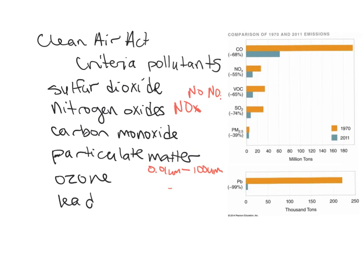Ozone (O3) impairs respiratory function, is harmful to plants and animals, and is a photochemical oxidant — air pollutants formed as a result of sunlight acting on chemical compounds. It oxidizes stuff, which can create secondary pollutants. Ozone can be directly effective by impairing respiratory function, and indirectly effective by being this photochemical oxidant.